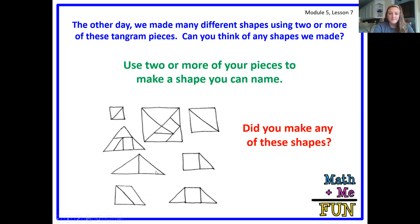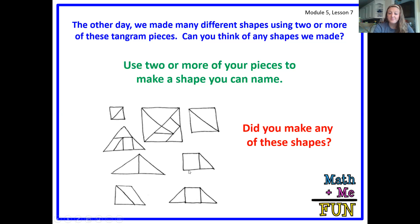Did you make any of these shapes that I have on the screen? You could have made this square with the small triangles, this square with all of them, or this square. You could have made a triangle, another triangle, a rhombus, a trapezoid, and another rhombus. There are lots of different things we could make, and we're going to work on being able to talk about the size of each object.